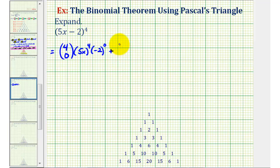And then for the next term, we'll have 4 choose 1, and now we'll only have 3 factors of 5x, so we have 5x to the third, and we'll start picking up factors of negative 2, so we'll have negative 2 to the first.